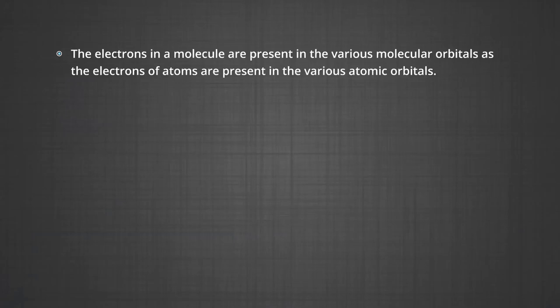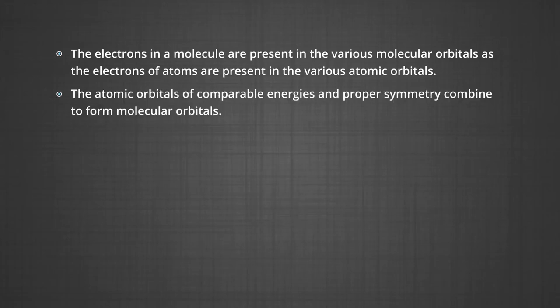The salient features of this theory are: the electrons in a molecule are present in various molecular orbitals, as the electrons of atoms are present in various atomic orbitals. The atomic orbitals of comparable energies and proper symmetry combine to form molecular orbitals.